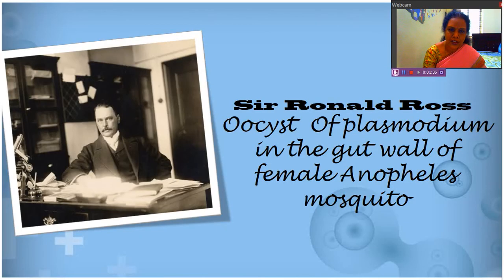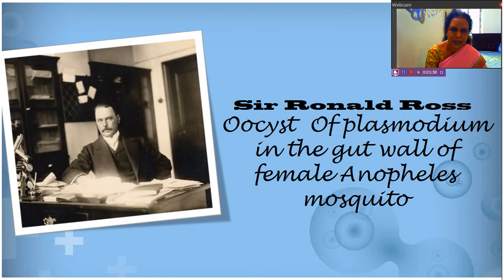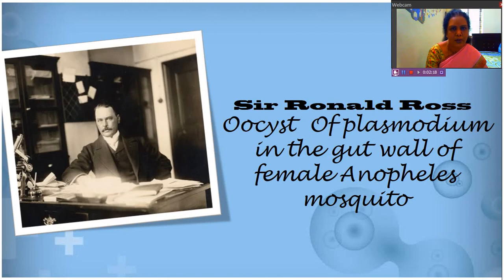The next one is Sir Ronald Ross. He discovered oocysts of Plasmodium on the crop wall of the mosquito, proving that mosquitoes are spreading the disease. For his work, he got the Nobel Prize in 1902. He proved it is the female Anopheles mosquito which spreads the disease by finding oocysts on the crop wall of the mosquito.